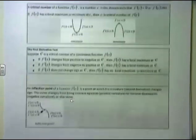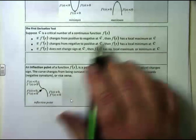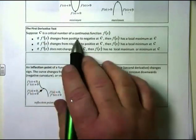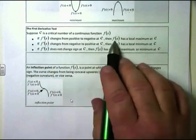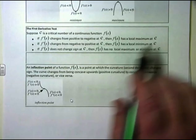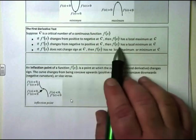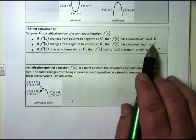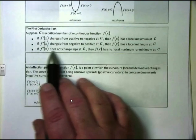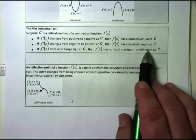The first derivative test tells us: suppose c is a critical number of a continuous function f(x). If f'(x) changes from positive to negative at c, then f(x) has a local maximum at c. If f'(x) changes from negative to positive at c, then f(x) has a local minimum at c. And if f'(x) does not change sign, then f(x) has no maximum or minimum at c.